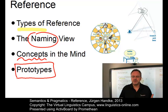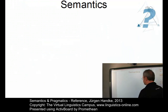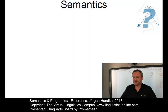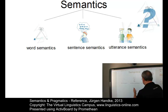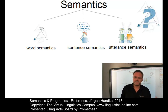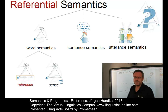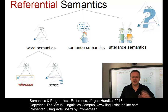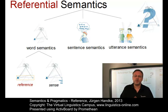Let us first locate reference within the overall field of semantics. Within semantics, with its main branches — word semantics, sentence semantics, and utterance semantics — word semantics seeks to explain the phenomenon of meaning in natural language by defining the nature of word meaning. There are two ways of looking at word meaning, resulting in two branches: reference or referential semantics, and sense or lexical semantics.